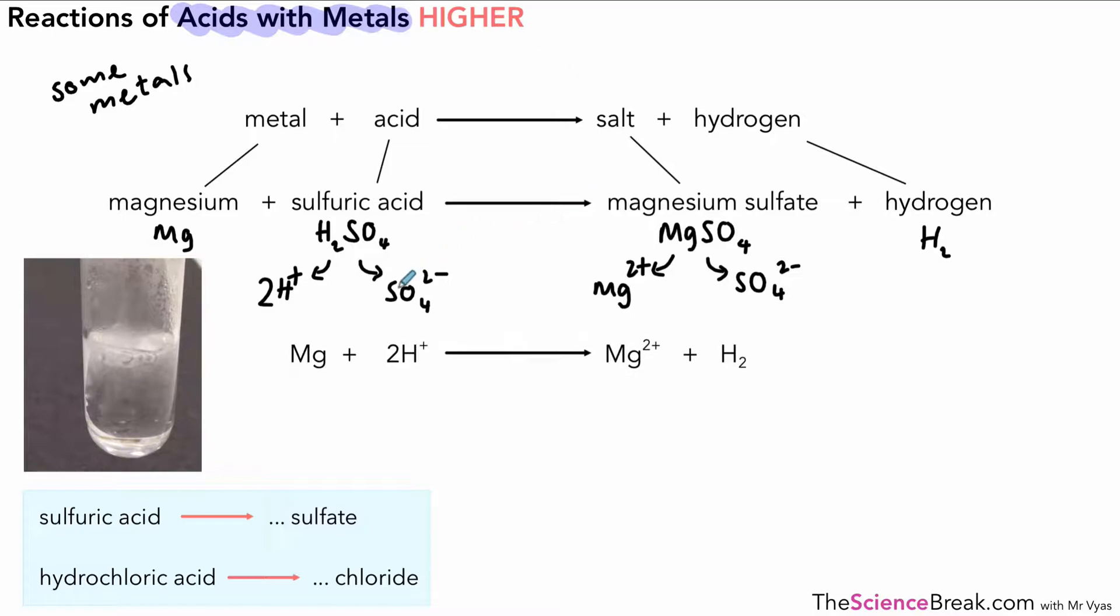Now we can ignore the sulfate because that doesn't change when we write what's called our ionic equation. We're just dealing with magnesium that's changed and hydrogen ions which have changed—in other words, the changes in the ions. You can see the ionic equation there below, so we can make a note that this is our ionic equation.